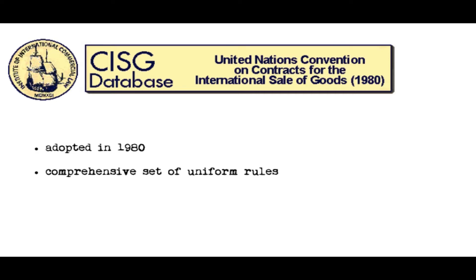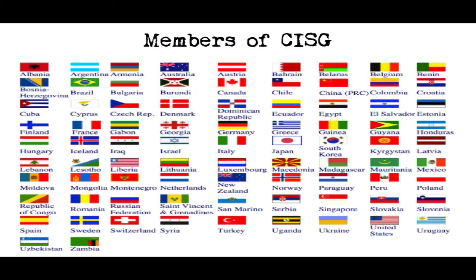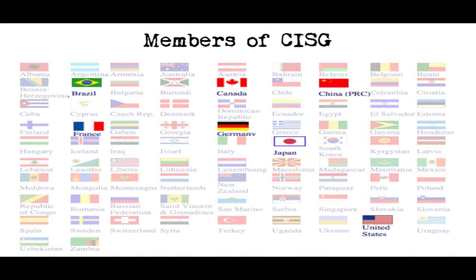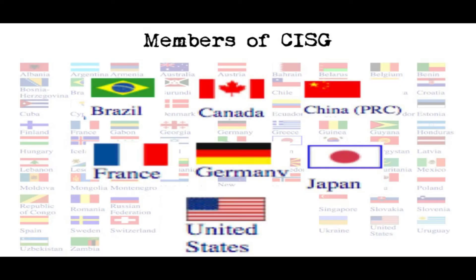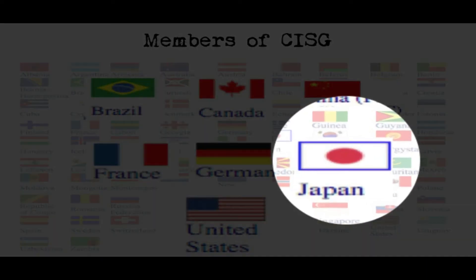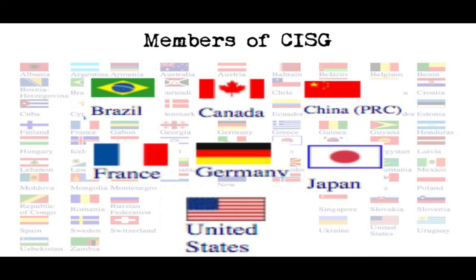As of 2020, 94 states are members. Although some significant participants in the international trading market have only recently just joined — for example, Brazil joined in April 2014, the 23rd largest exporter in the world. Japan joined in 2009; Japan is the 6th largest exporter in the world.